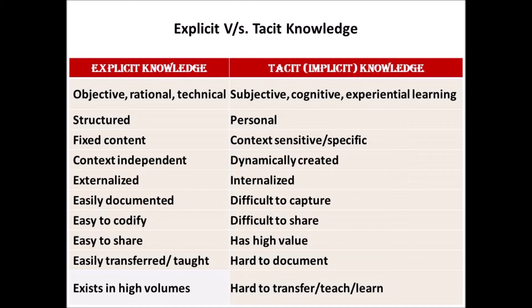Sixth point, Explicit Knowledge is Easily Documented, whereas Tacit Knowledge is Difficult to Capture. Seventh point, Explicit Knowledge is Easy to Codify, whereas Tacit Knowledge is Difficult to Share. Eighth point, Explicit Knowledge is Easy to Share, whereas Tacit Knowledge has High Value. Ninth point, Explicit Knowledge is Easily Transferred, whereas Tacit Knowledge is Hard to Document. Tenth point, Explicit Knowledge exists in High Volumes, whereas Tacit Knowledge is Hard to Transfer.